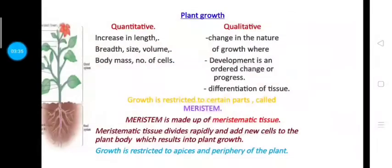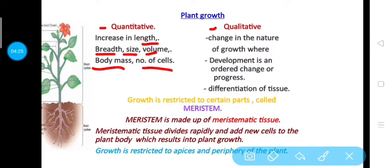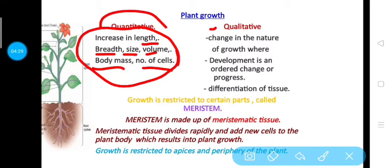Next, we will study the different aspects of plant growth. There are two main aspects: the quantitative aspect and the qualitative aspect. In the quantitative aspect, we consider increase in length of a plant or plant part, increase in breadth or diameter, increase in size of a plant part, increase in volume of a plant part like fruit, and increase in body mass of a plant.